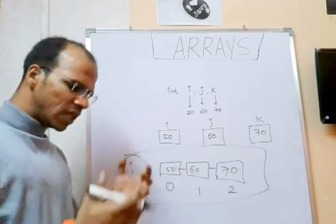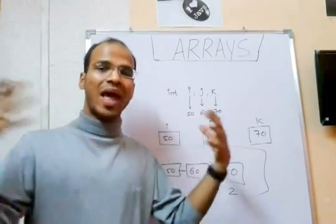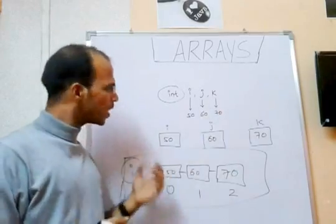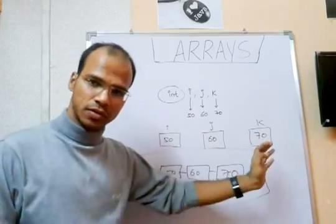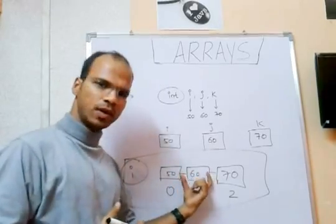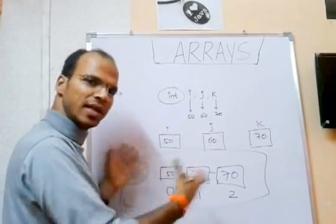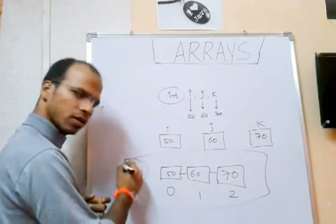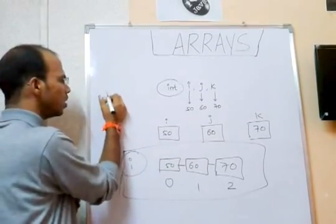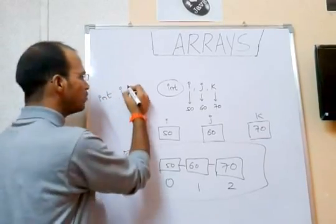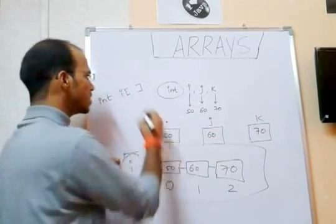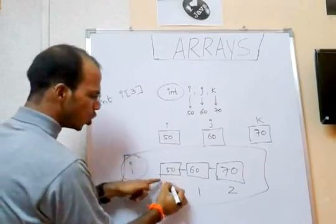Arrays are nothing but a collection of elements. The only condition is that the elements must be of a similar type — int throughout int, float throughout float, character throughout character. In this example, all elements are int. When you collect all these int elements, you get an array of int named 'i'. To create this array in C, you define the type, then the variable name, and then the size. Here we are taking size 3, so the array size is 3.